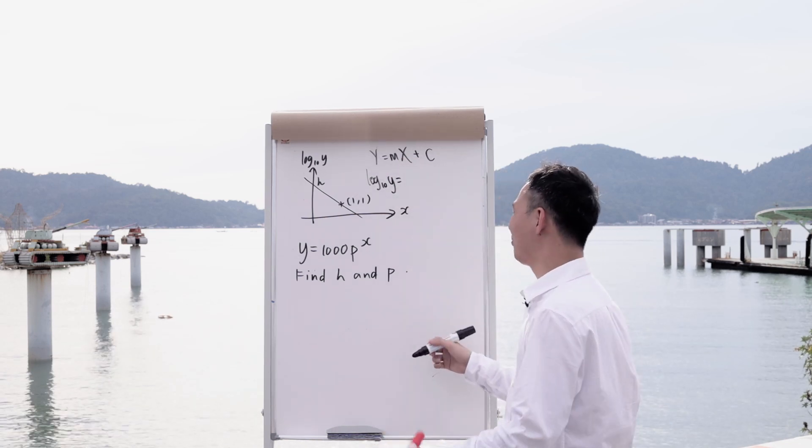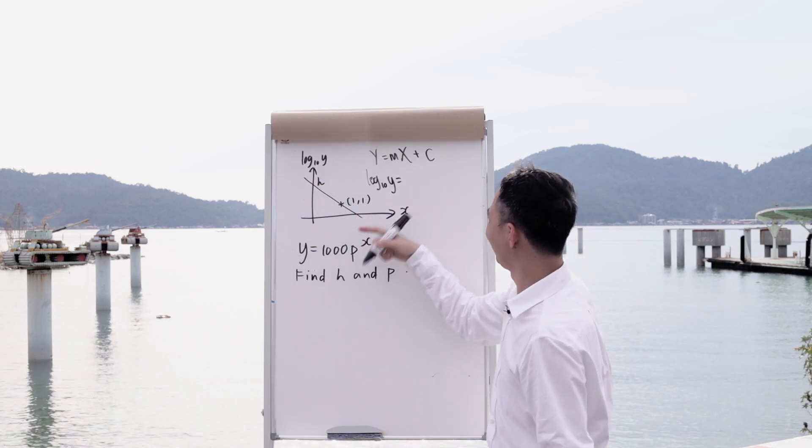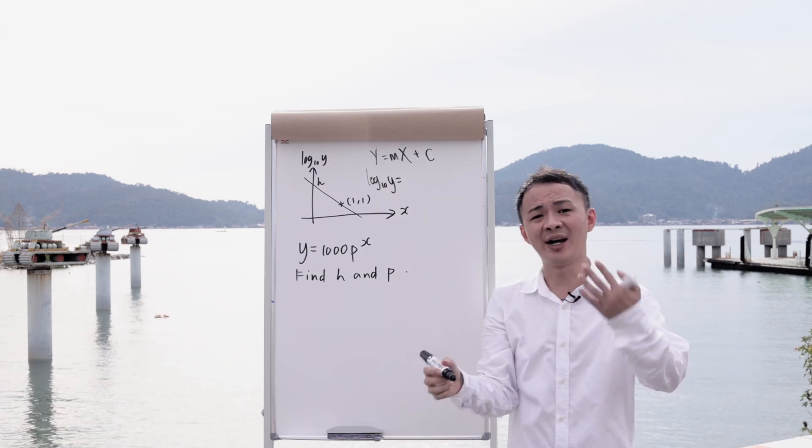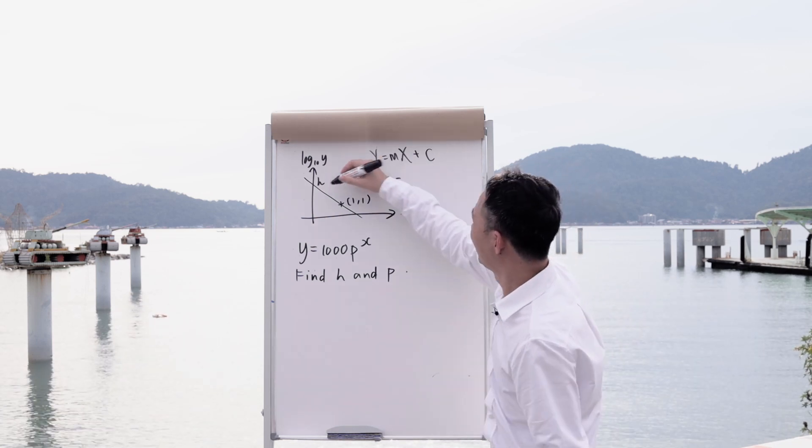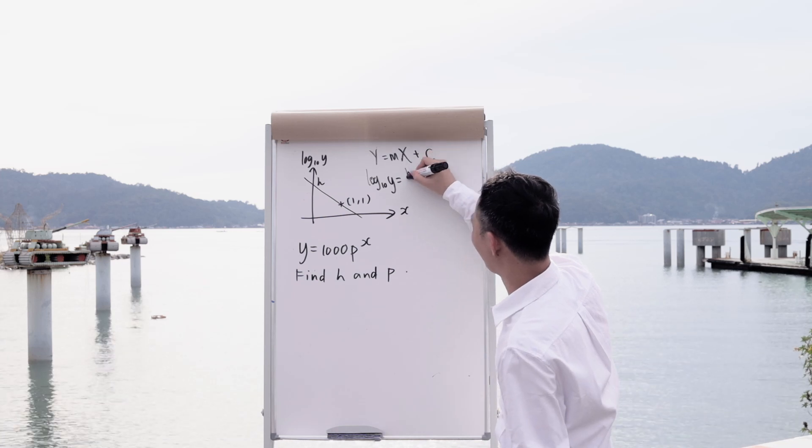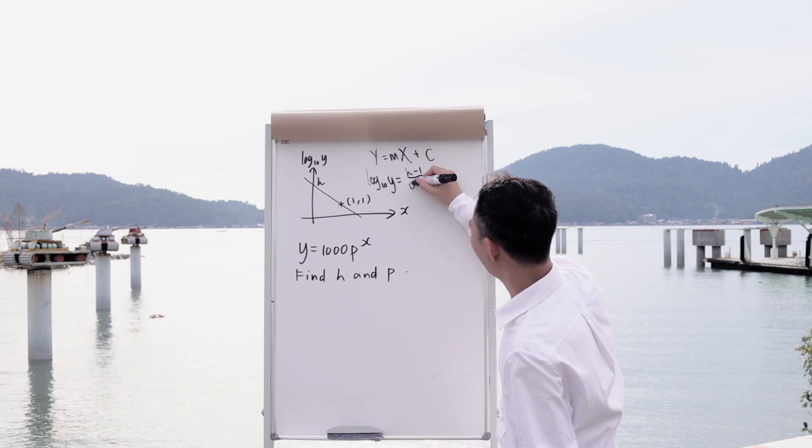My m will be my gradient. Maybe I can find it here also. I'm using a gradient formula y2 minus y1 over x2 minus x1. So which is, I can say h minus 1 over 0 minus 1.